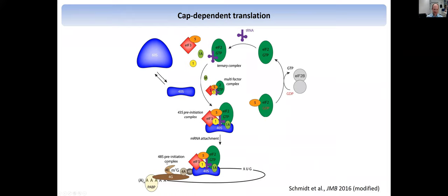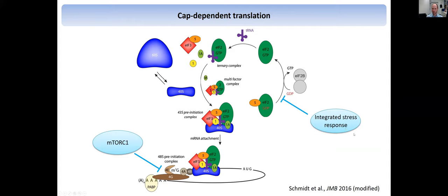The pre-initiation complex will then go to the CAP structure on an mRNA to start translation there after recruiting the large subunit. The important part is this CAP structure, where there's another part of the complex — for example, 4E proteins that bind here and help with recruitment of this initiation complex. Per textbook, this is where mTOR and integrated stress response act. Integrated stress response leads to phosphorylation of eIF2-alpha, which forms a complex with eIF2B, and this prevents ternary complex formation. While mTORC1 is a kinase, it usually phosphorylates 4E-BP1. If mTOR is inhibited, 4E-BP1 is not phosphorylated anymore, it really binds to eIF4E, and eIF4E cannot sit at the CAP anymore.